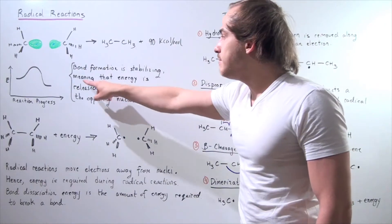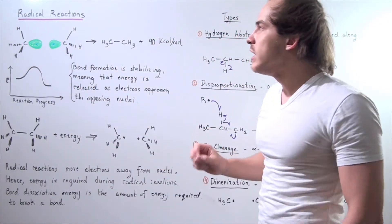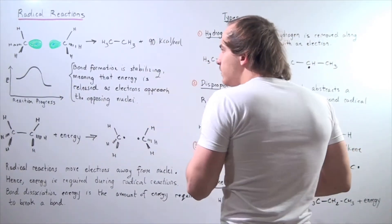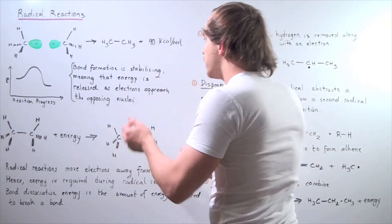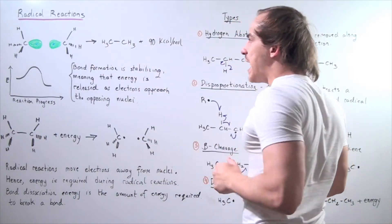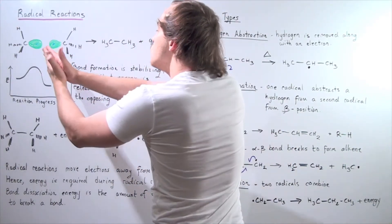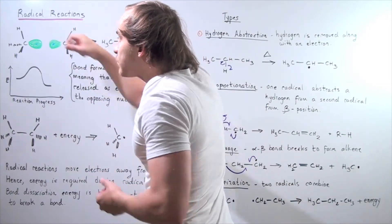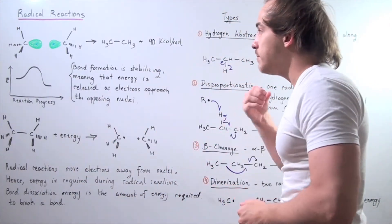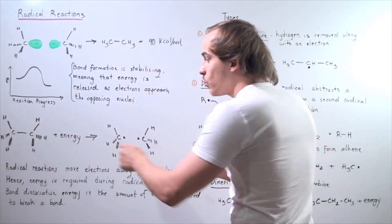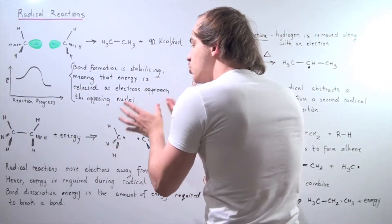Bond formation is stabilizing, meaning that energy is released as electrons approach the opposing nuclei. Now let's discuss the reverse process. If we go from the products back to our reactants, what we're actually doing is inputting energy — specifically 90 kilocalories per mole — so that this bond is broken and these two electrons move away from the nuclei. We pull them away by inputting energy, by doing work. We're inputting energy to pull these two electrons away to form our radicals. This is known as radical formation.